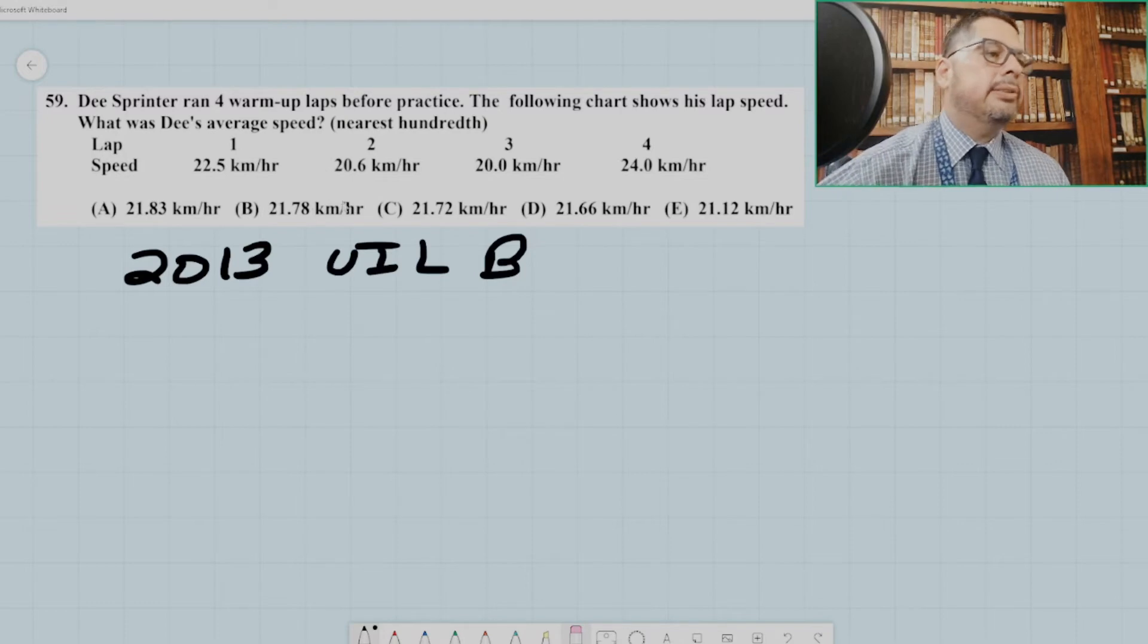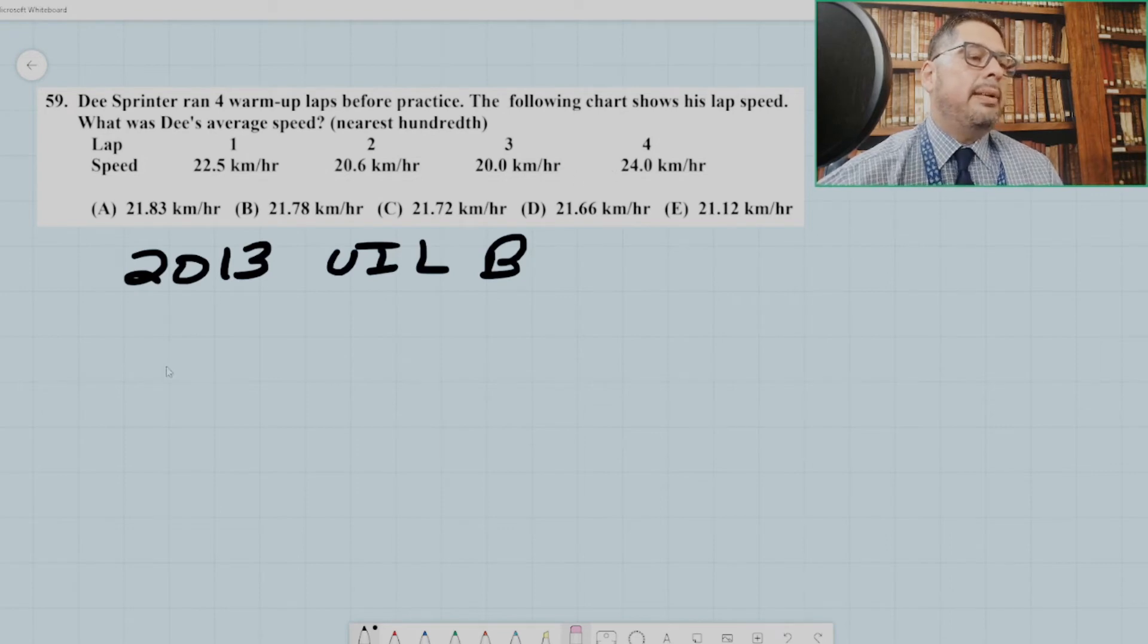Alright, so let's take a look. The question asks, D Sprinter ran four warm-up laps before practice. The following chart shows his lap speed. So it says, what was D's average speed? So this is a case where he's traversing the same distance at different rates. So lap one is 22.5 kilometers per hour, lap two 20.6 kilometers per hour, lap three 20 kilometers per hour, and lap four 24 kilometers per hour.